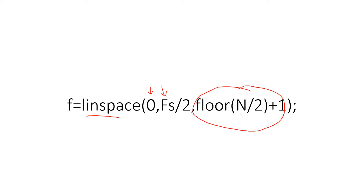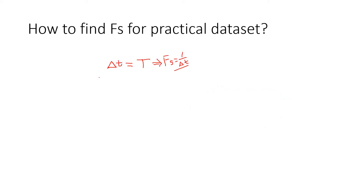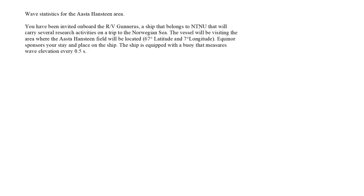N can easily be calculated as the length of the dataset. To find the sampling rate fs, note that if your data is measured at intervals of delta_t, then delta_t is the sampling time and fs = 1/delta_t. That's how we calculate the sampling rate for a practical dataset.